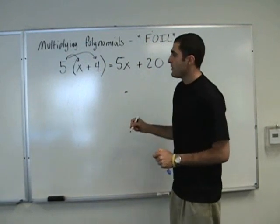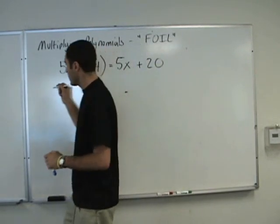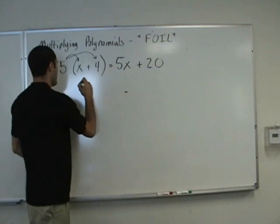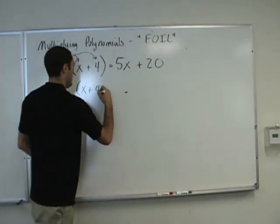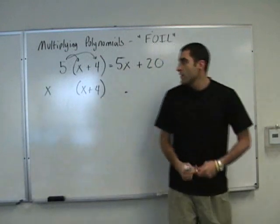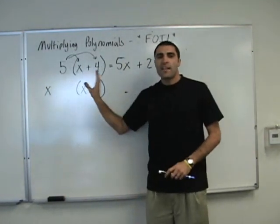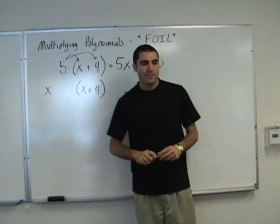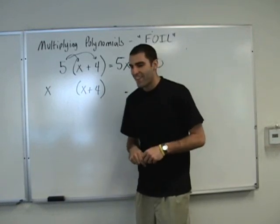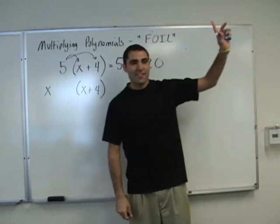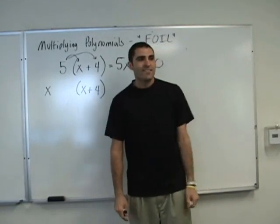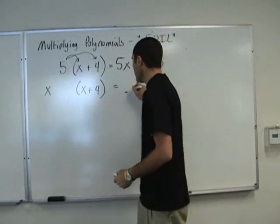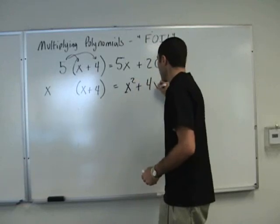Next problem. We're going to do the same thing, except allow for a little space. So I know there's space here, but we're going to pretend there's no space and do distributive property again. Imagine there's no space. Volunteer to distribute this — x squared plus 4x. x squared plus 4x, correct.